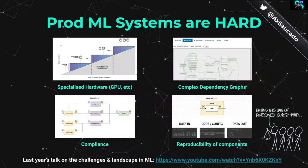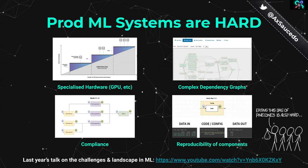Production ML systems require and depend on specialized hardware — either very large amounts of memory, specialized processing units like GPUs or TPUs, complex dependency graphs, compliance requirements, and reproducibility of components. Ultimately, there is a complexity layer added on top of the already complex challenge of managing production microservices. It is important to introduce best practices that allow us to manage this complexity.